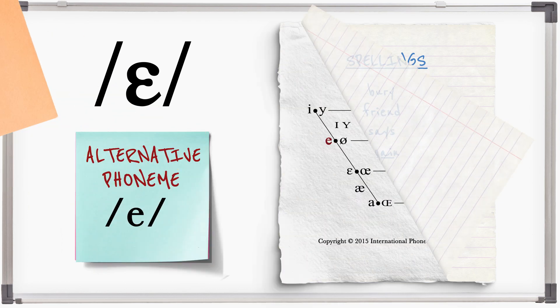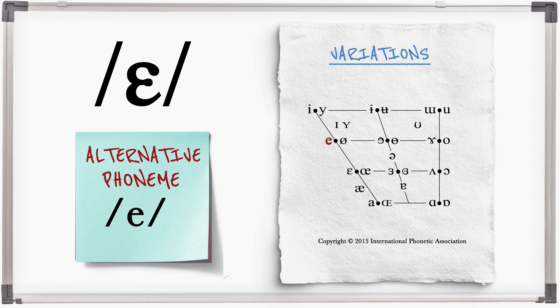A lot of IPA charts use the close mid e symbol for this phoneme. This indicates a more close pronunciation. But most modern pronunciations of this sound are in between e and e on the vowel grid.